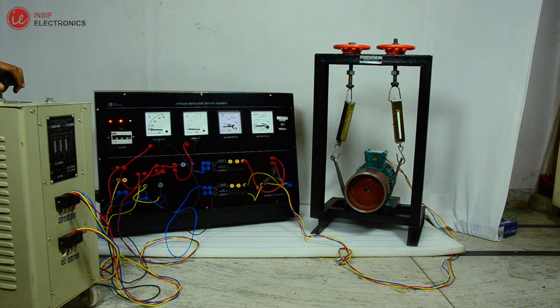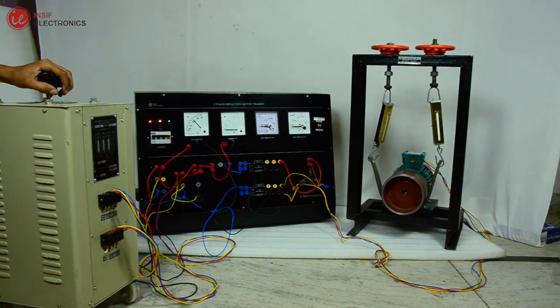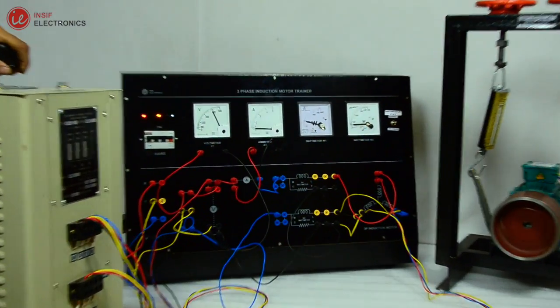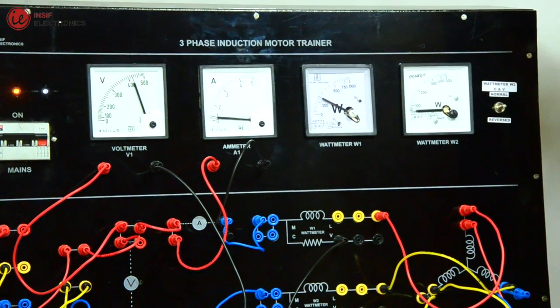Now increase the voltage by rotating the variac knob so that the voltage is 415 volts. Now note down the current and the wattmeter readings.